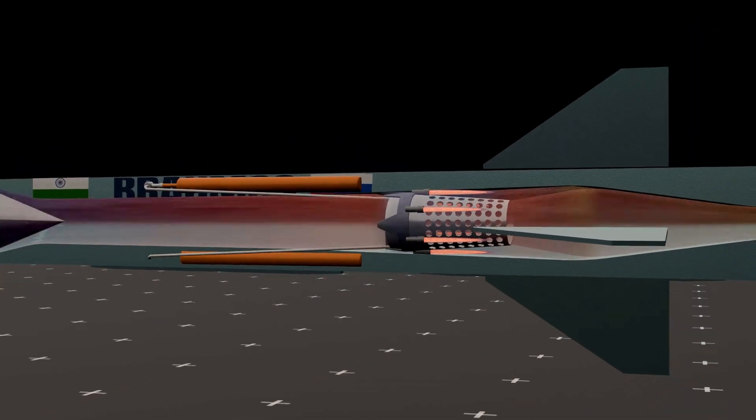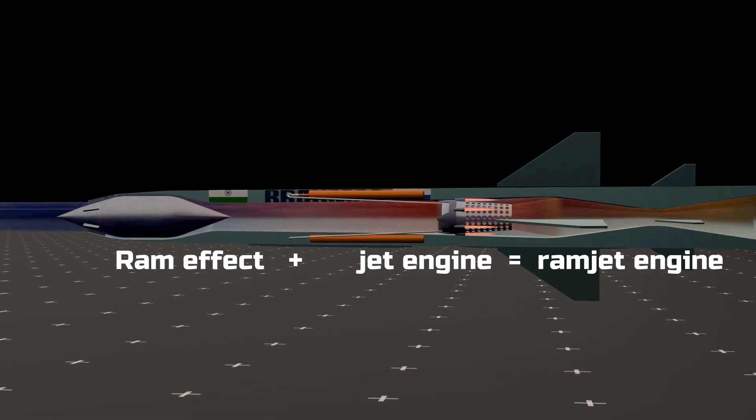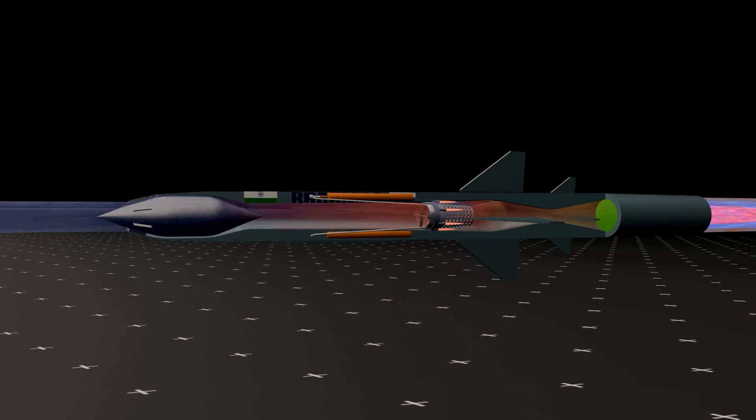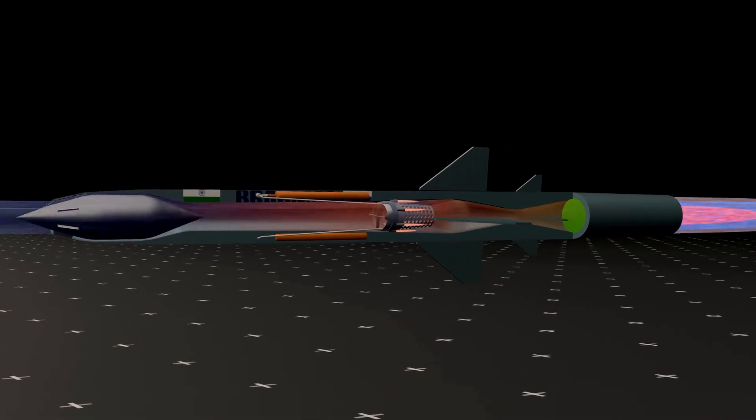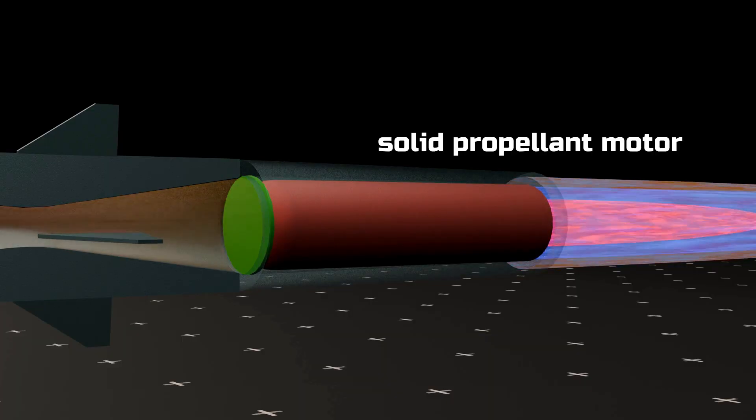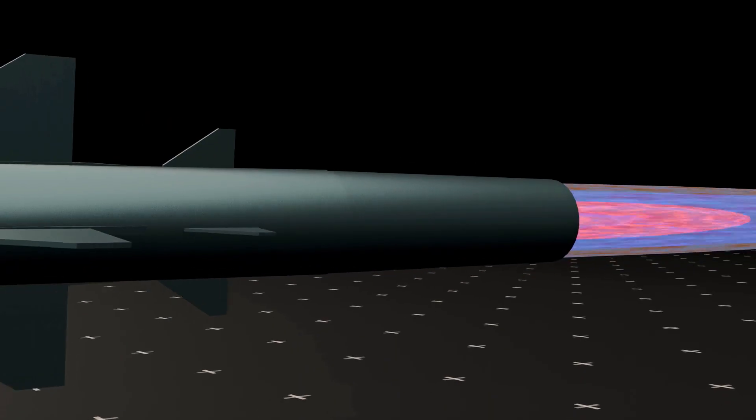With this design, the Brahmos missile can achieve speeds up to Mach 3. However, ramjet engines cannot handle the initial air resistance below Mach 1. Therefore, Brahmos uses a solid propellant booster motor for the initial acceleration phase. Now let us understand the complete launch process.